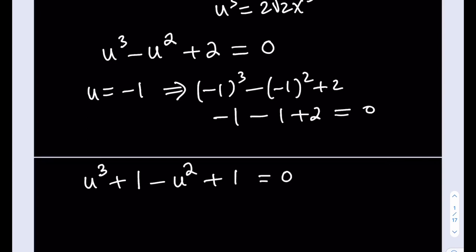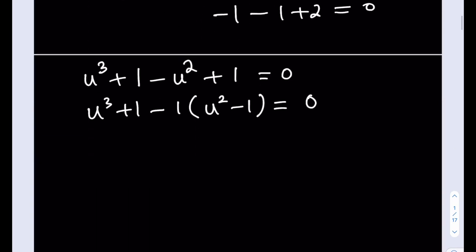So I'm going to be getting this expression: u³ + 1 - u² + 1, and this expression is meaningful because now if you take out a negative 1, you're going to notice that we get u squared minus 1 from here, which is difference of 2 squares. So I do have a sum of 2 cubes and a difference of 2 squares. Awesome. We're good to go.